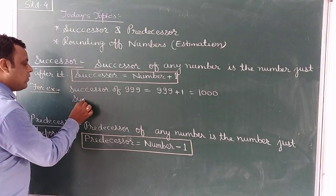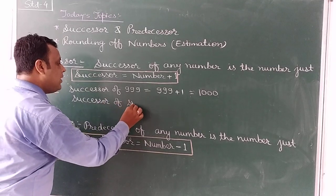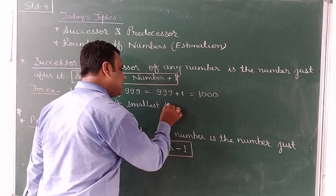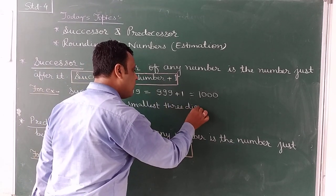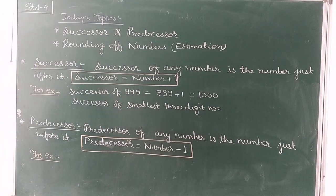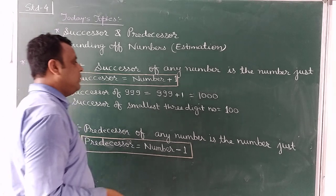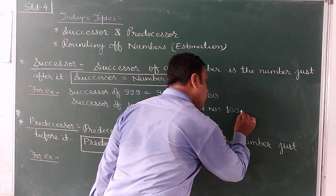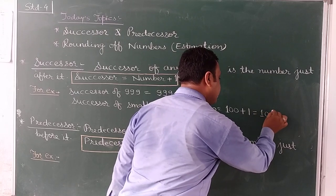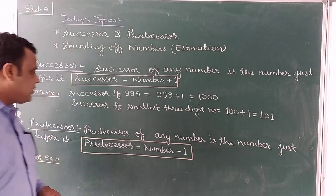Another example: succession of the smallest 3-digit number. First of all, we have to write the smallest 3-digit number, that is 100. And we have to write the succession of this number, so we add 1 to it and we get 101. So 101 is the succession of the smallest 3-digit number. Now the second topic is predication.